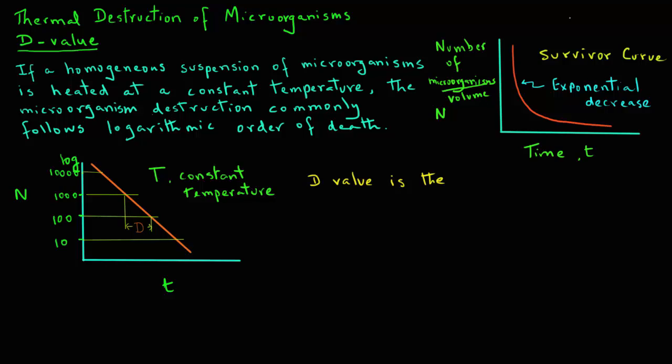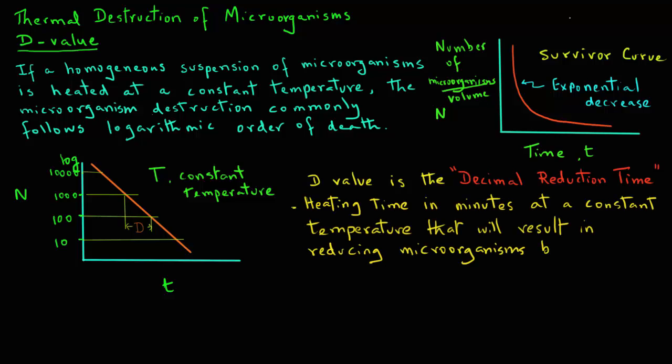D value is called the decimal reduction time. It is the heating time, in minutes, at a constant temperature, that will result in reducing the microorganisms by a factor of ten.